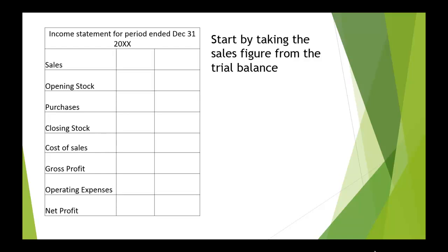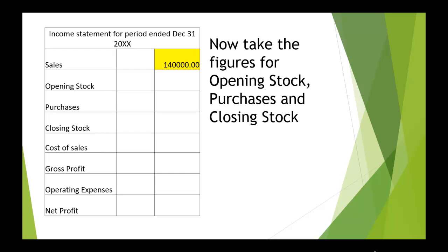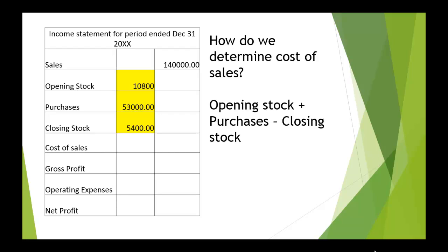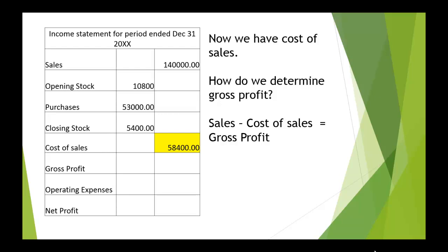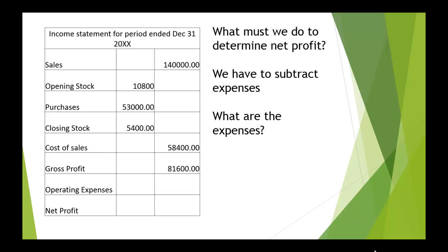We start by taking the sales figure from the trial balance. We then need the figures for opening stock, purchases, and closing stock. To determine the cost of sales, we take opening stock plus purchases minus closing stock. We've now got the gross profit by taking sales less cost of sales — and there's our gross profit: 81,600.